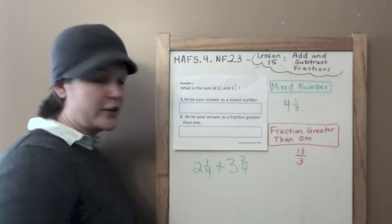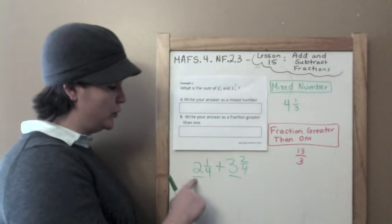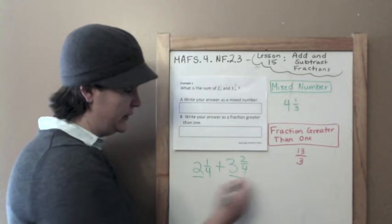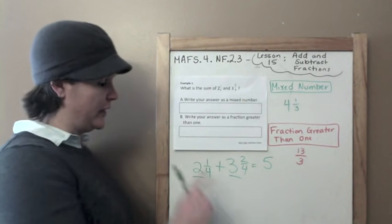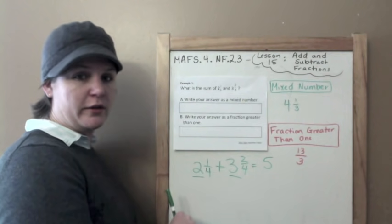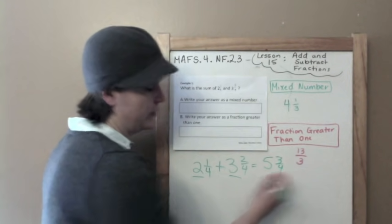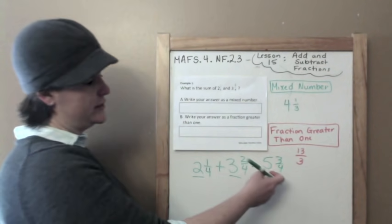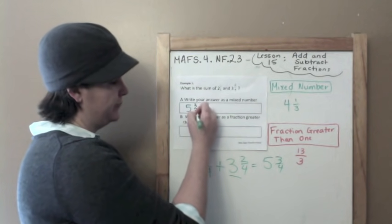So what I'm going to do first is I'm going to add my whole numbers, okay? 2 plus 3 equals 5, and I'm going to add my fractions, 1/4 plus 2/4 equals 3/4. So this is my mixed number, 5 and 3/4.